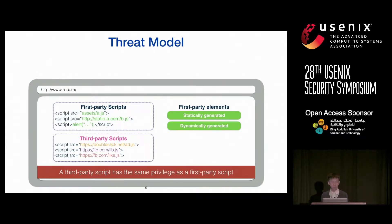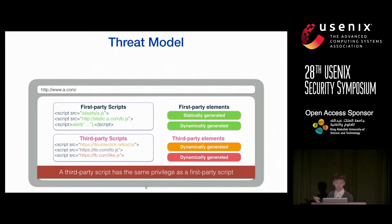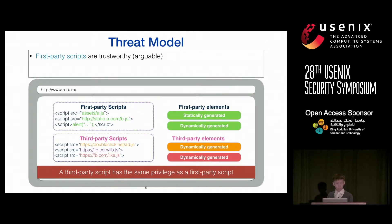Because third-party scripts have the same privilege as first-party scripts, they can do whatever the first-party script can do — including creating new elements. In our threat model, we consider first-party scripts to be trustworthy, though this is arguable: if the user directly visits a malicious website, that first-party website itself may not be trusted at all.